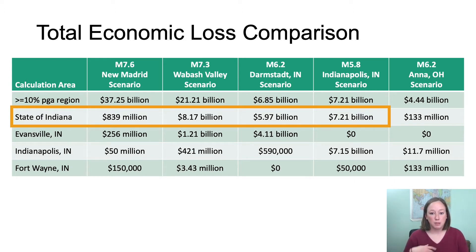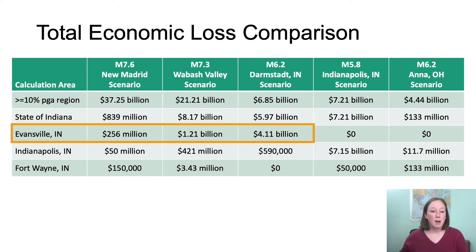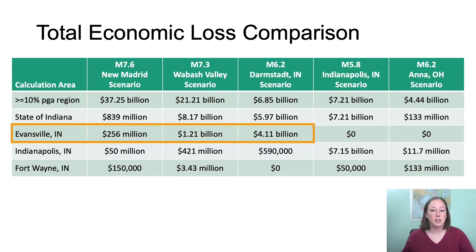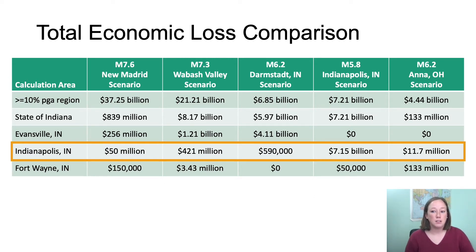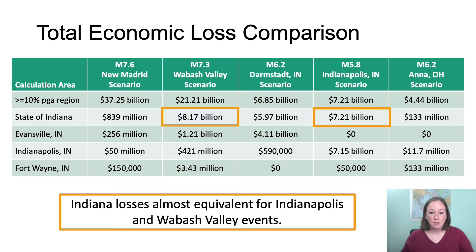These moderate, closer events must be considered when assessing seismic hazard. For Evansville, it was somewhat surprising that the moderate Darmstadt earthquake just north of the city was much more impactful than the larger Wabash Valley event to the west. Although unlikely, even a moderate-sized earthquake near Indianapolis could produce major impacts far greater than a more distant New Madrid or Wabash Valley event. Losses for Indiana from an Indianapolis scenario are estimated at around $7.21 billion, compared to about $8.17 billion for a Wabash Valley scenario — nearly equivalent — making it critical to account for moderate population-center earthquakes.